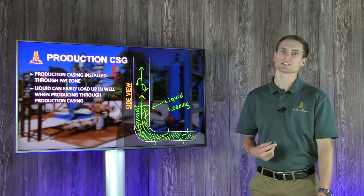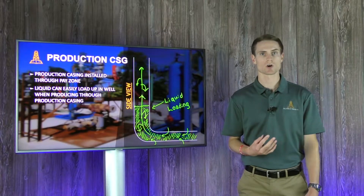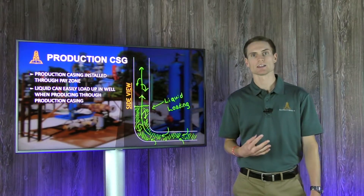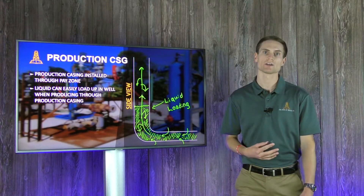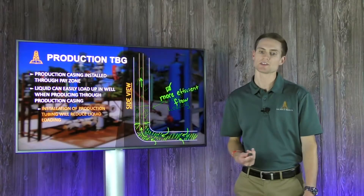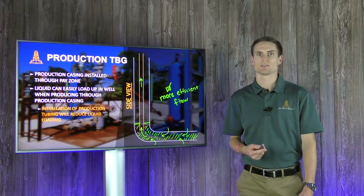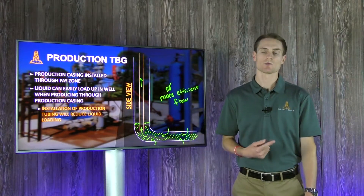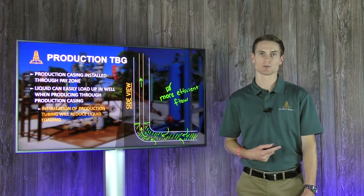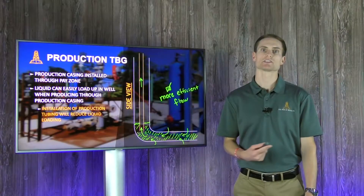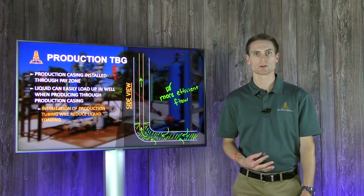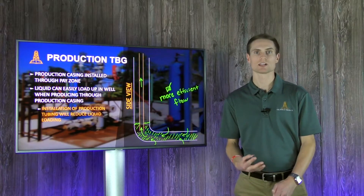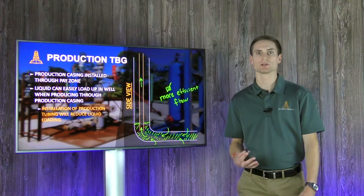This is because the production casing is about four and a half or five and a half inches wide, which is way too large in diameter to produce through, because you won't be able to lift it at the critical velocity or flow rate required to transport all the liquids to the surface. This is why we install production tubing. It's a well-known method of solving this problem, and production tubing is typically anywhere from one and seven-eighths inch to two and seven-eighths inch in diameter. This is a string of tubing lowered into the well by a workover rig later in the well's life. Some companies even install production tubing before they begin producing the well so that it won't lose its ability to lift fluid naturally as soon.